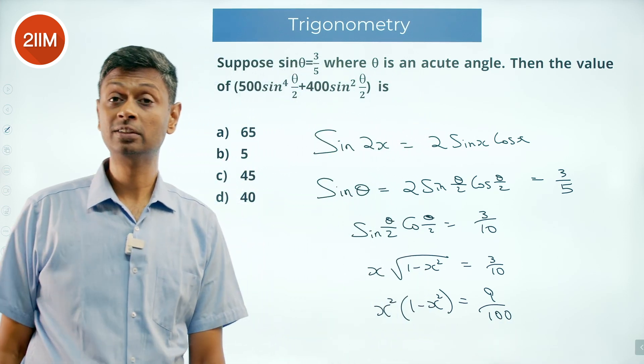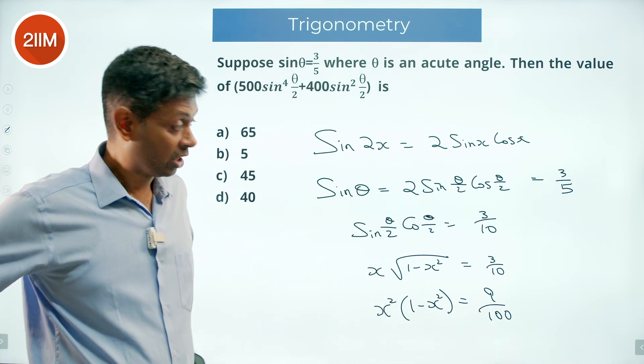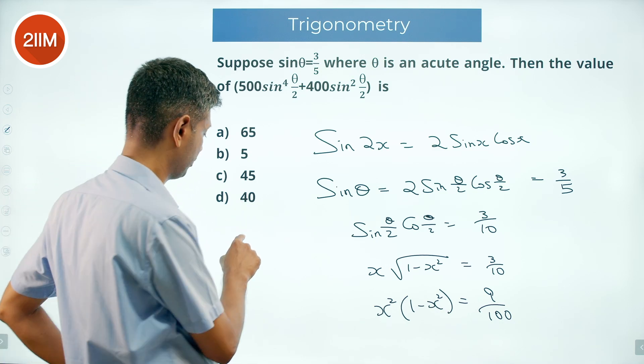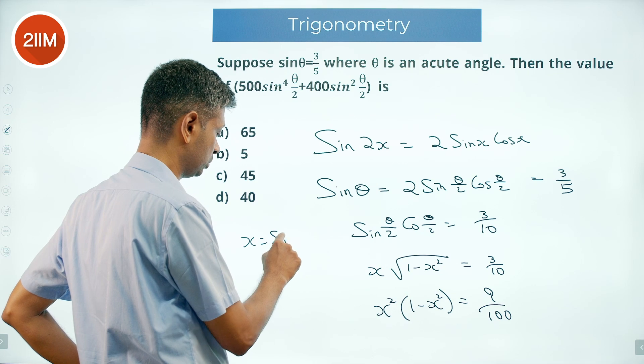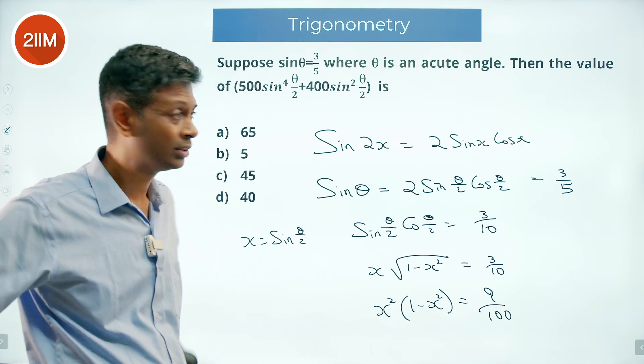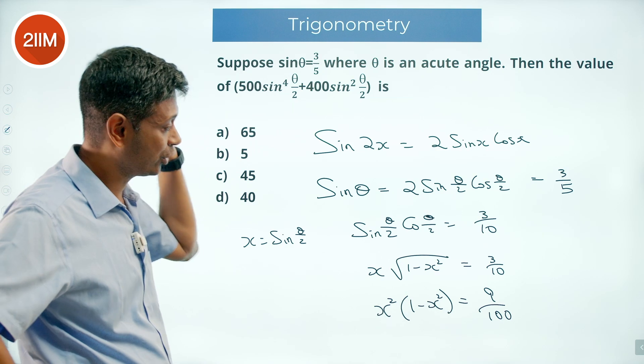I need to find x square. That will be sine theta by 2. Once I've got that, that will be sine square theta by 2. I've assumed that x is sine of theta by 2. Once I plug that in, I should get the answer.